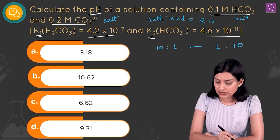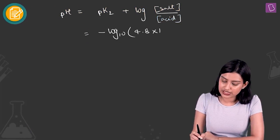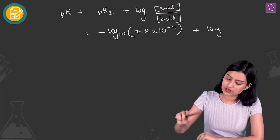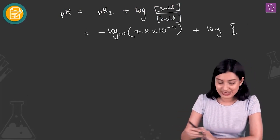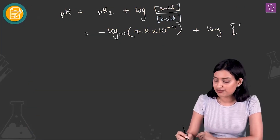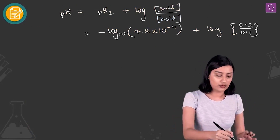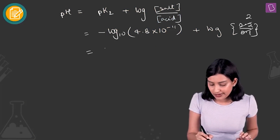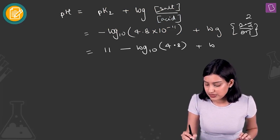pK2 is minus log base 10 of 4.8 × 10⁻¹¹, plus log of salt concentration 0.2 over acid concentration 0.1. That simplifies to a ratio of 2. So you have 11 minus log of 4.8 plus log 2.